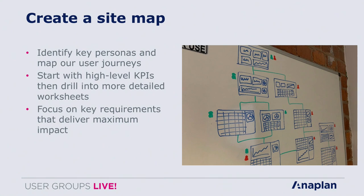Hopefully you're excited by what we've shown you, but you may be thinking how do we start to implement this? We've worked with customers over the last 12 months to understand implementation challenges and want to share some tips and tricks. One thing that has worked really well is drawing out a site map — identifying key personas and key user journeys and mapping them out visually. This makes it easy to trace those routes, think about how you structure your data, and lead users from high-level KPI and trend dashboards through to more detailed worksheets. Focus on the key requirements that deliver maximum value — the new UX is quick and easy to build with, so you can demonstrate value really quickly.